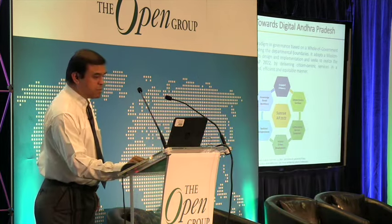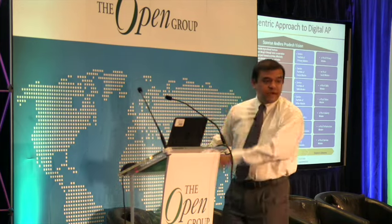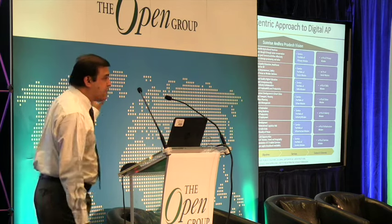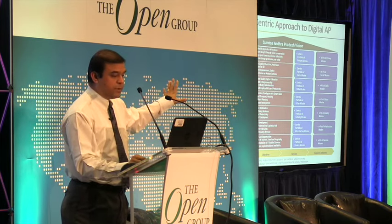There are seven mission areas — primary social skills and so forth. For each of those mission areas we have developed key performance indicators. Going through this list, it does not say 'building better IT systems' as a mission — something that architects tend to keep doing. It is all about affecting people, businesses, industries, and common citizens.